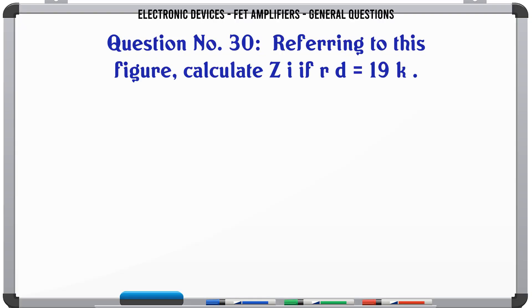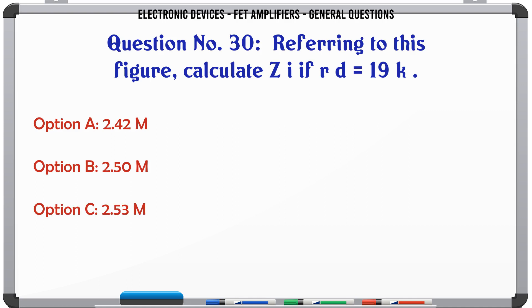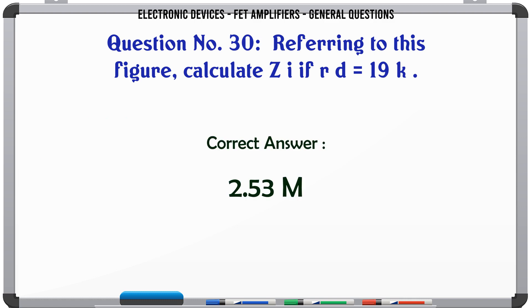Referring to this figure, calculate ZI for RD = 19K. A. 2.42MΩ. B. 2.50MΩ. C. 2.53MΩ. D. 2.59MΩ. The correct answer is 2.53MΩ.